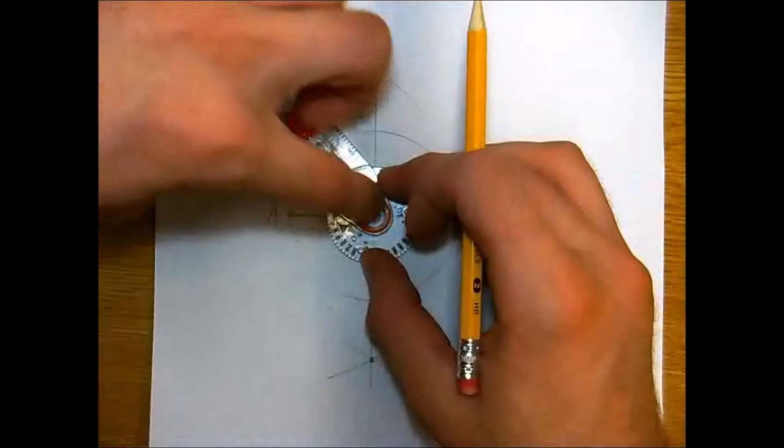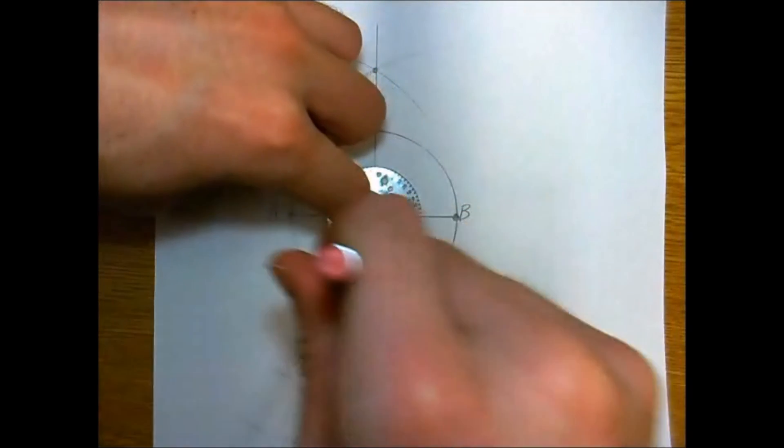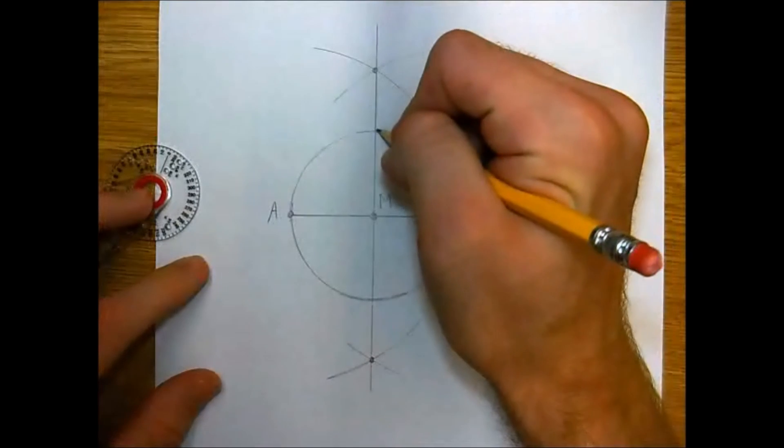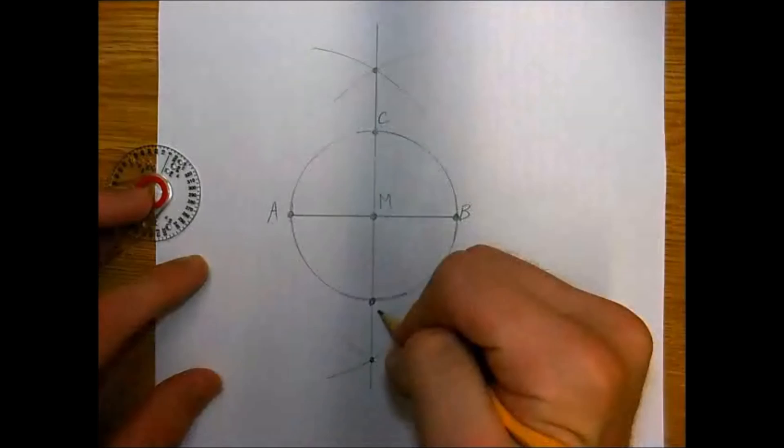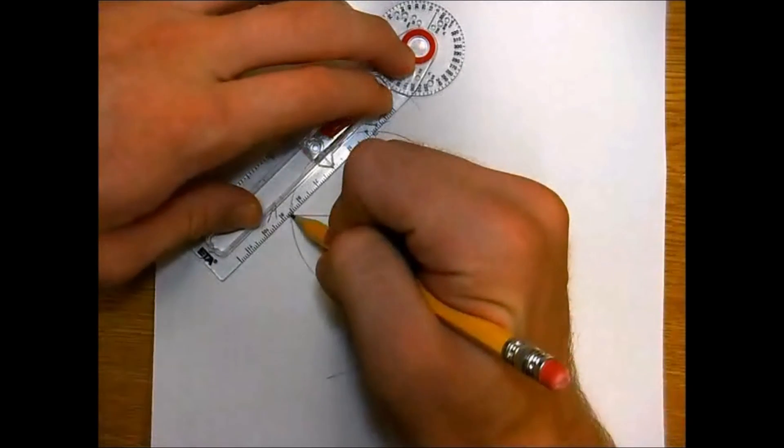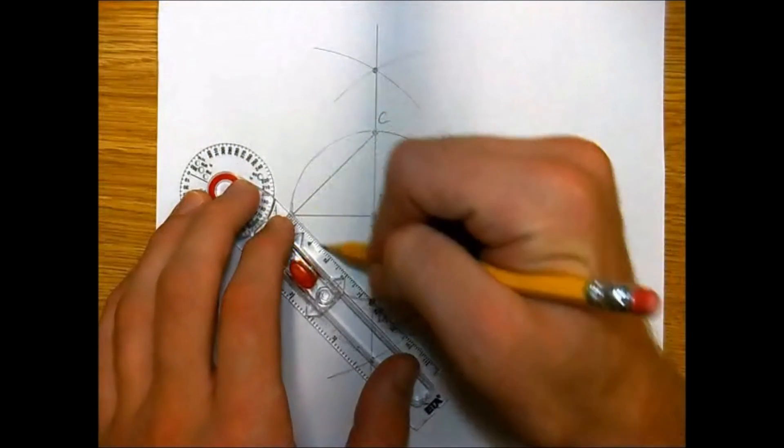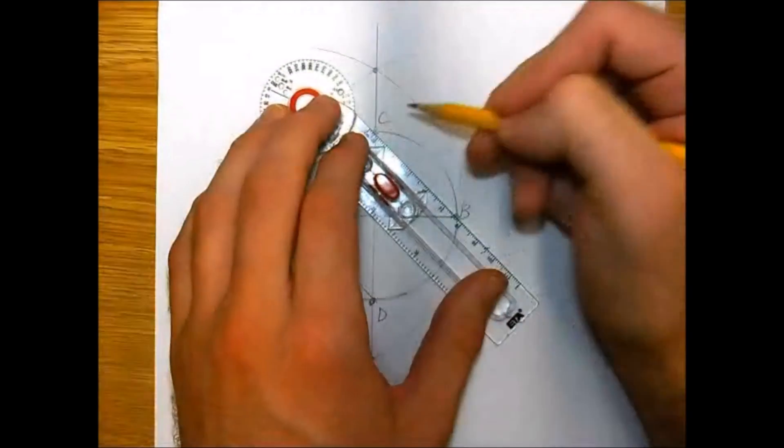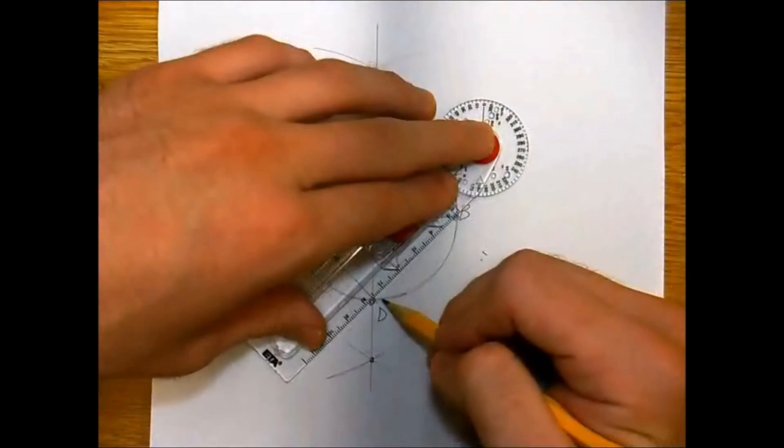Now the circle is going to intersect the perpendicular bisector at two locations and those two locations represent the final two points of our square. So the last step is to use the straight edge to connect the four points together and once we connect the four points together we will have successfully constructed a square inscribed in a circle.